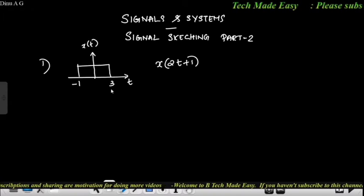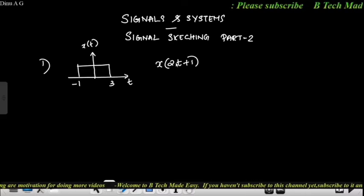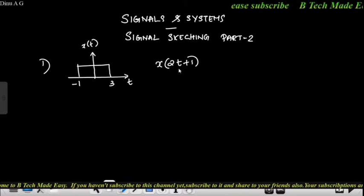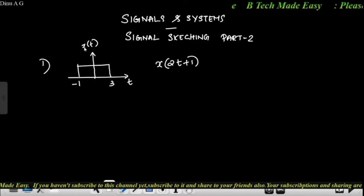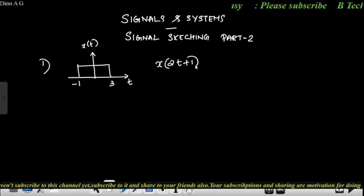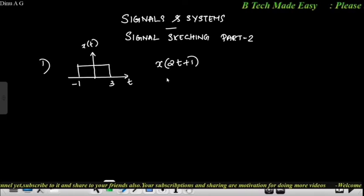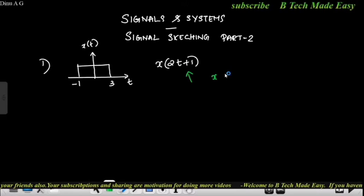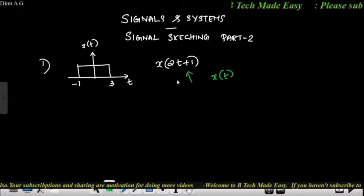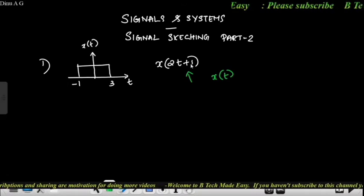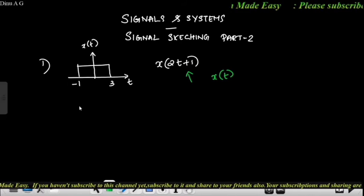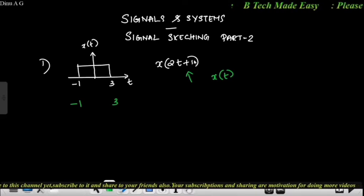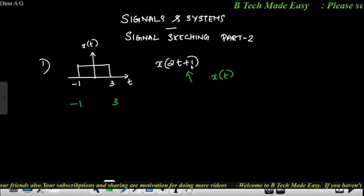We will discuss the final answer directly. Now the operations have different details which we will cover in the video. This is x of t. We will draw x of 2t plus 1. The trick is to convert x of t. If it looks like plus 1, we change it to minus 1.